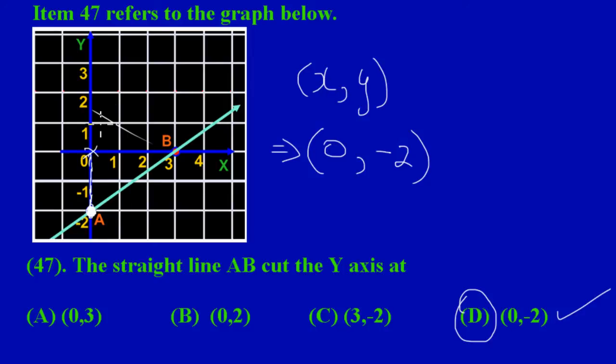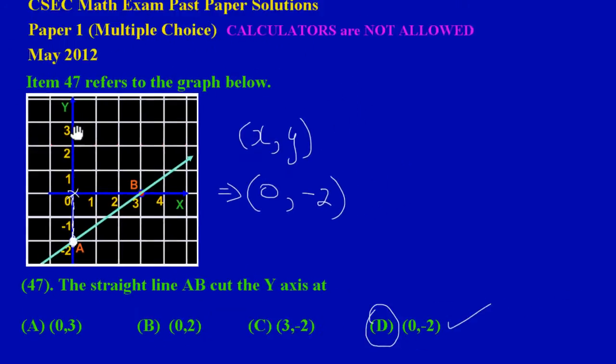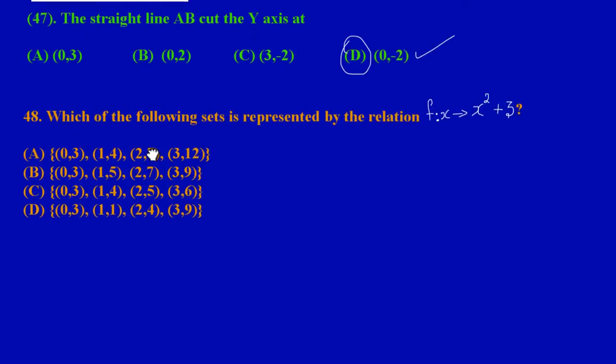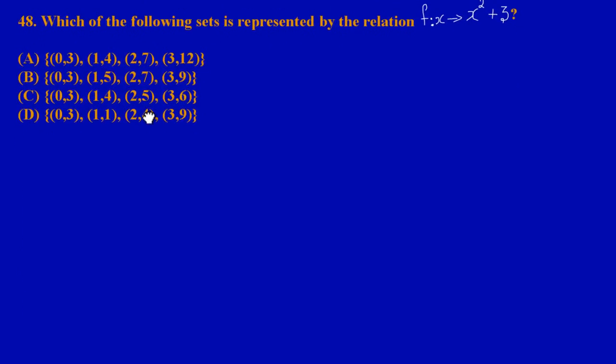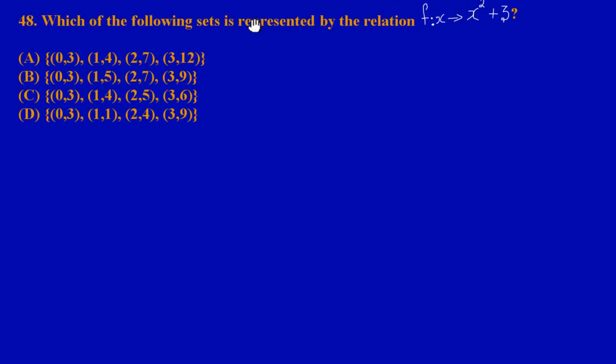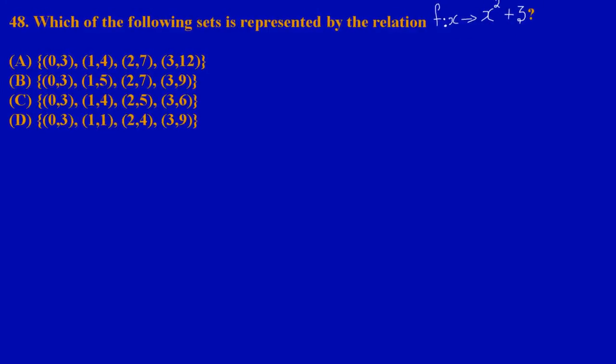Now let's look at question 48. It states: which of the following sets is represented by the relation? Here they have given us the relation f(x) is a mapping onto some function x² + 3, and they have given us some options to choose which one would best match this function.